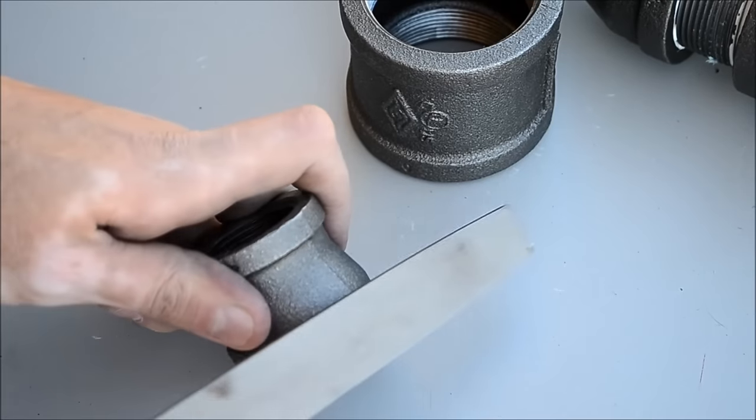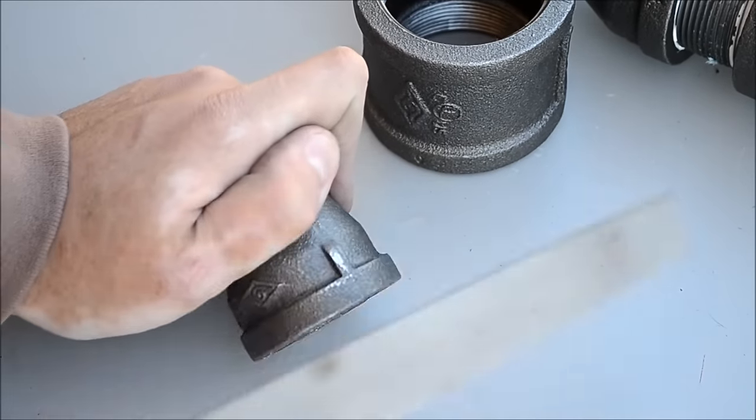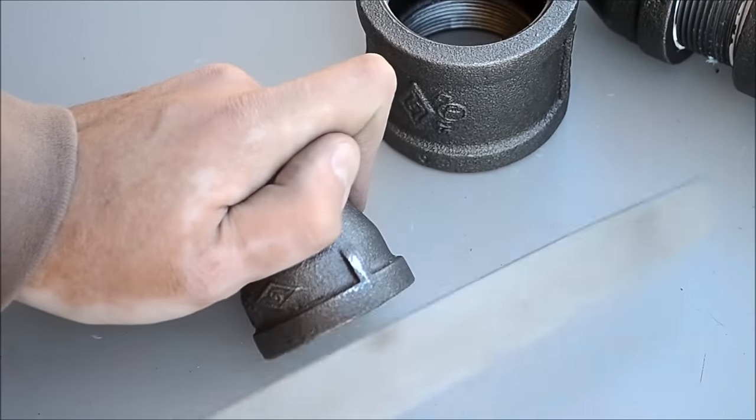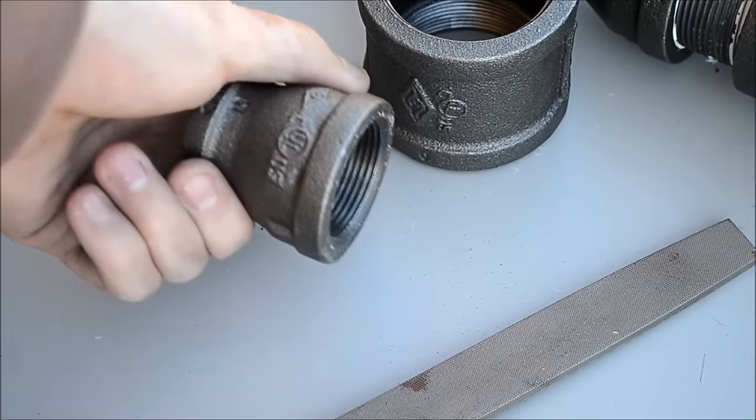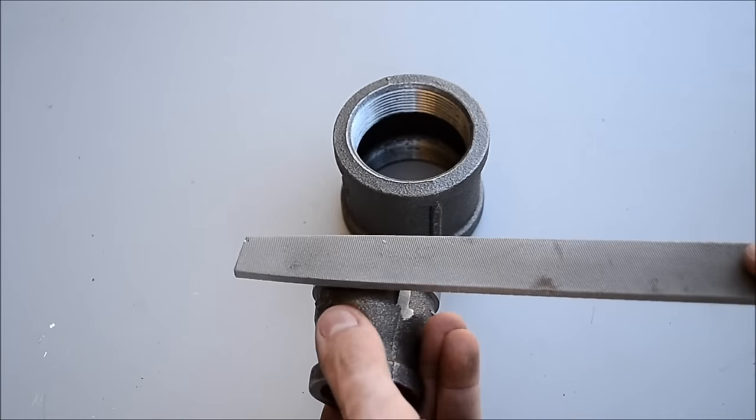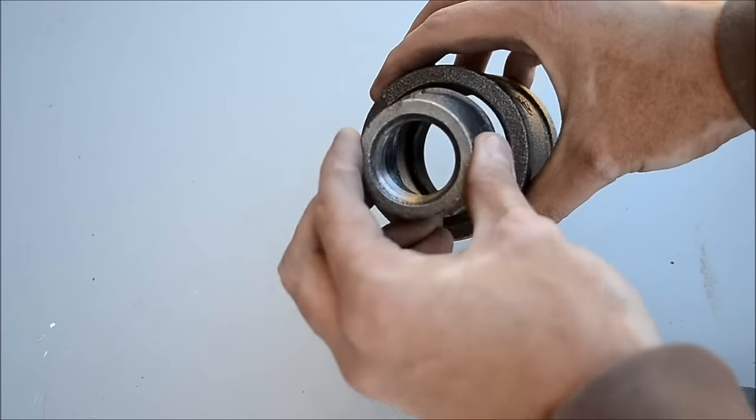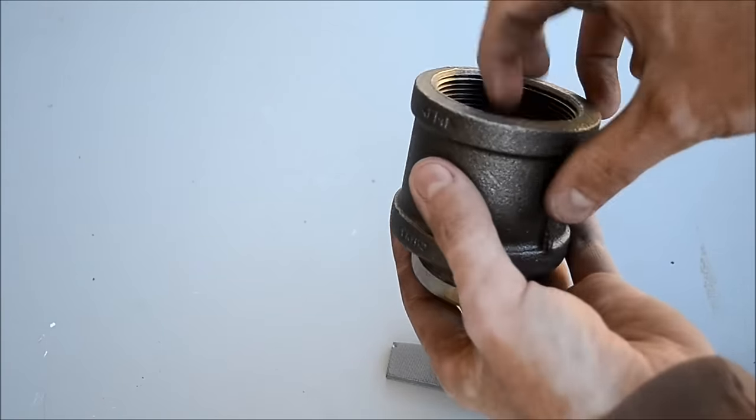We will need to file down the 1 inch to 1 and a quarter inch reducer so that it will fit into the 2 inch coupler. Once the reducer is filed down, it should fit easily through the 2 inch coupler.